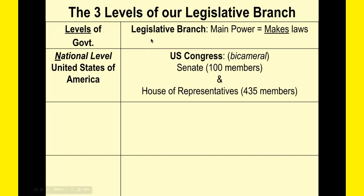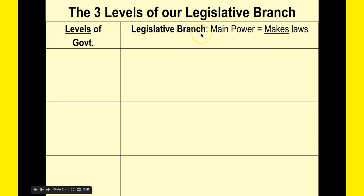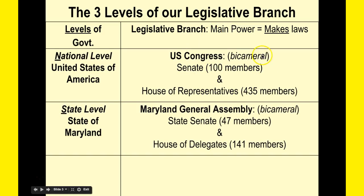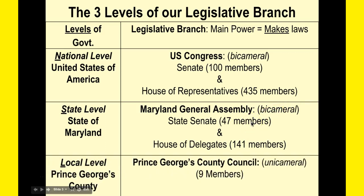Reviewing the three levels of our legislative branch — the main power of any legislative branch is to make laws. At the national level, we have Congress, which is bicameral, meaning it has two chambers: the Senate and the House. In the state of Maryland, you have the Maryland General Assembly, which makes laws dealing with the state of Maryland — also bicameral. And then in Prince George's County, where we live, we have the Prince George's County Council, which is unicameral — it only has one chamber. So if you have a problem with trash pickup, schools, or roads, you're going to want to complain to the Prince George's County Council.